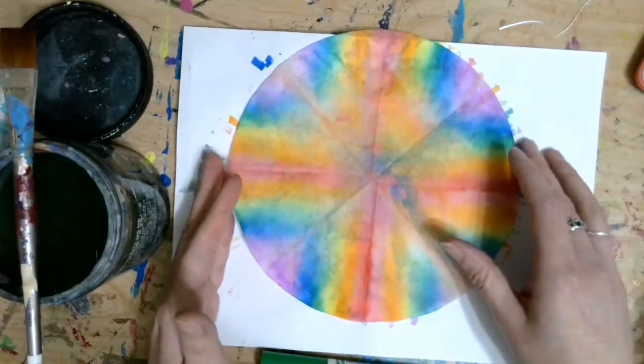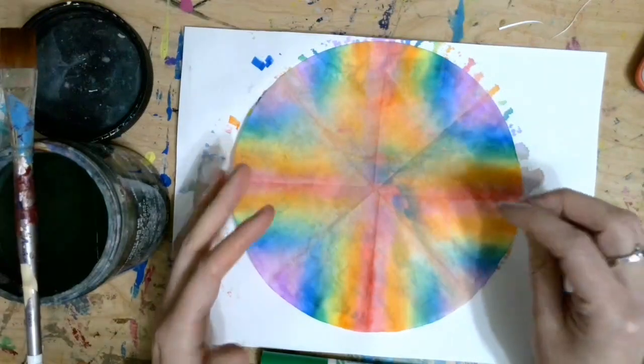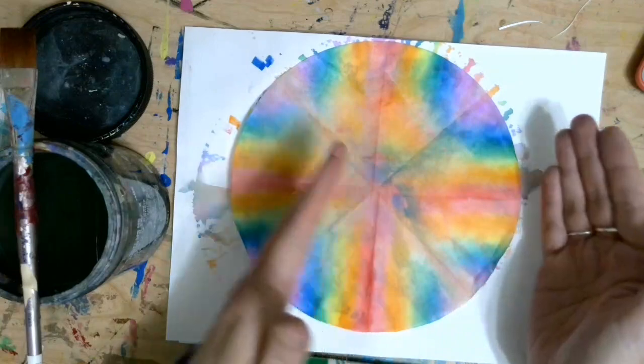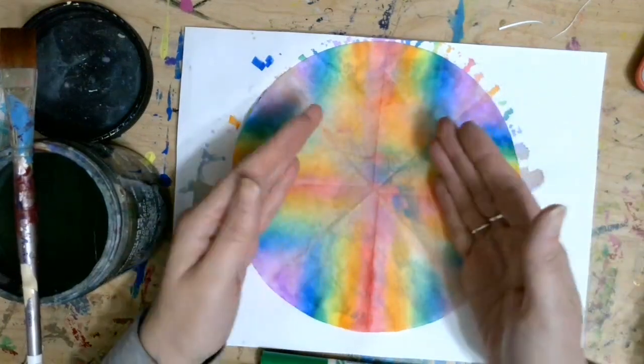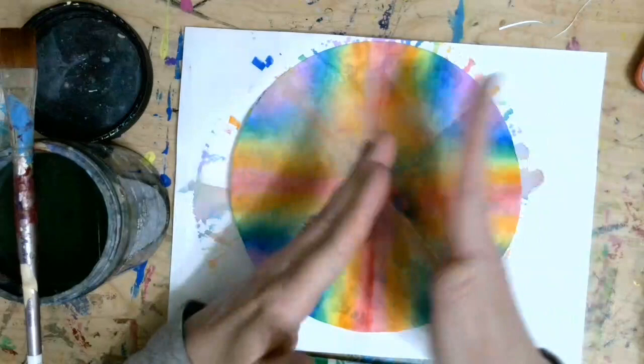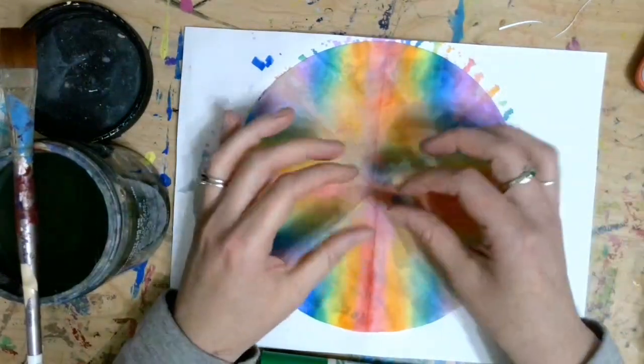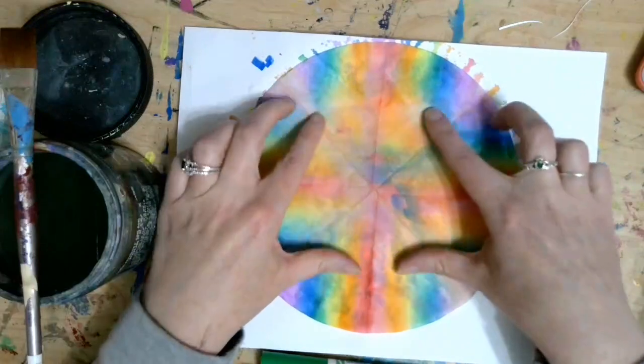Now radial symmetry is very similar except for instead of just being symmetrical if you fold it in half, it would be symmetrical if I folded it in half horizontally, vertically, or diagonally. It means that shapes, lines, and colors are radiating from the center.